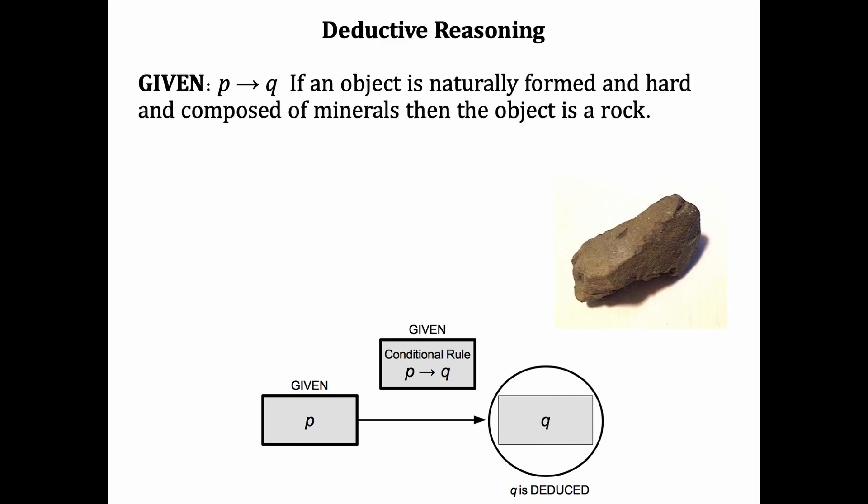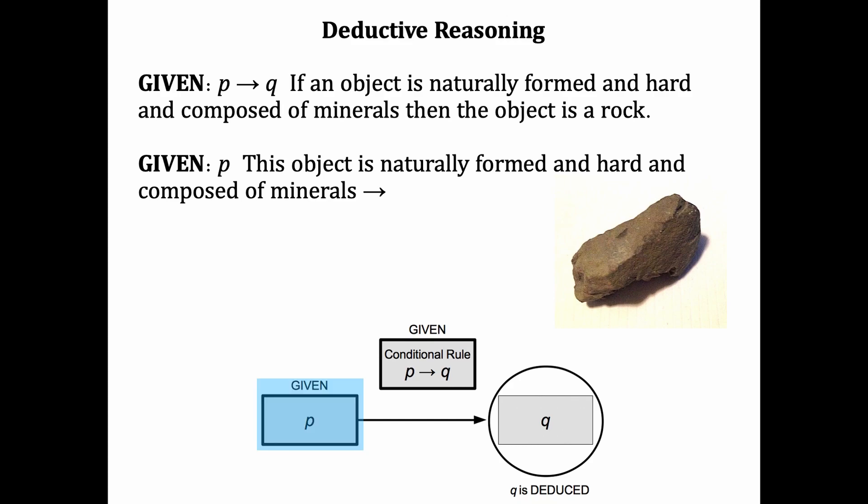Here's an example. If an object is naturally formed, and hard, and composed of minerals, then the object is a rock. Let's assume that that is the given definition of a rock. Let's assume that it's true. Let's say it's also given that the object pictured here is a naturally formed object that's hard and composed of minerals. That's P. Now since we said before that whenever P occurs, Q will follow, then we can deduce here that Q must follow. The object must be a rock. That's deductive reasoning.